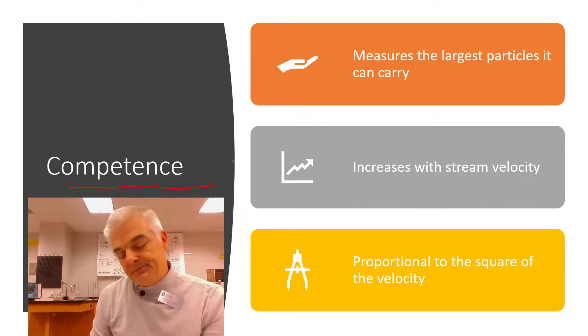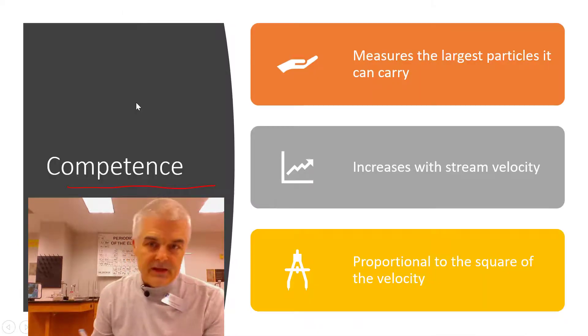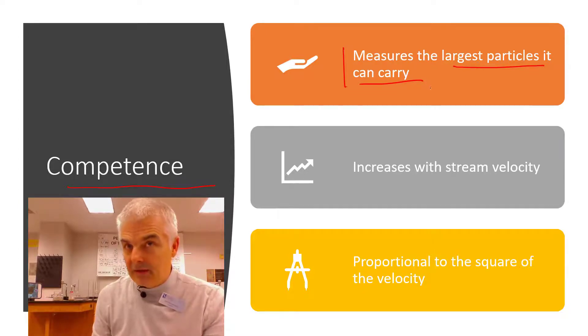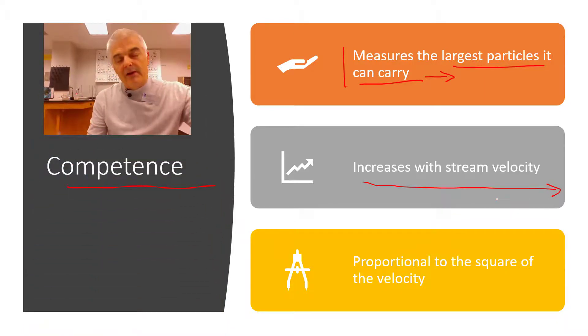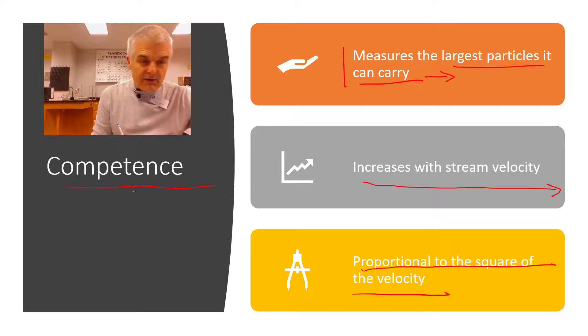All right. And then here's a new term. And this is a little confusing, I think. And the term is called competence. Now competence measures, this is important, the largest particles it can carry. All right. So a river can carry, and this is the ones that are moving, it can't carry a big boulder, or can it? It can carry a big boulder, but sometimes it has a higher capacity or capacitance for it to move water. Now the faster the speed of the river, the larger the boulder or whatever, the substance it can bring down. And it's interesting that it's proportional to the square of the velocity. And this has been mathy, but it's really cool. So if I were to double, let's think about this. If I double the stream velocity, the velocity of the stream, what's going to happen is it will quadruple or times four the competence.